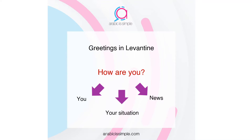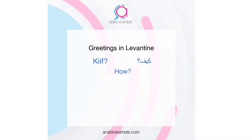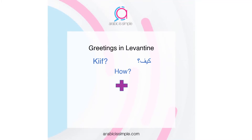Let's start with the first way of saying 'how are you.' You use the question tool 'kief,' which means 'how.' Then you add a possessive pronoun to show if you are talking to a male, a female, or a group of people. If directing your question to a male, you add the sound 'ak.' If to a female, you add the sound 'ik.' And if to a group of people, regardless of gender, you add 'ku.'